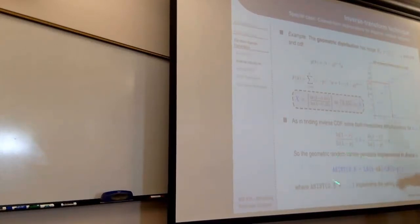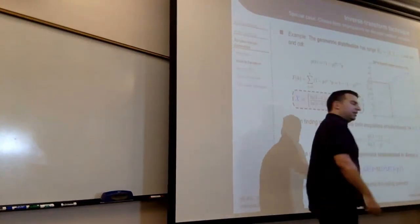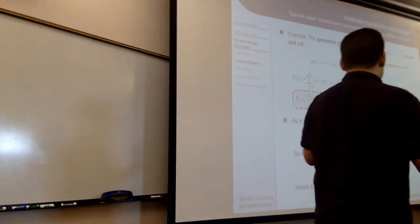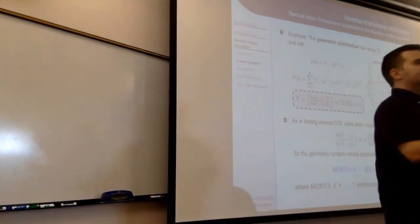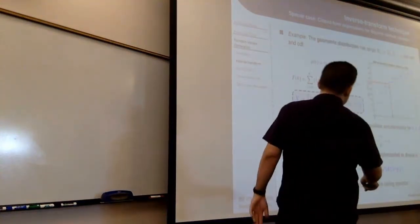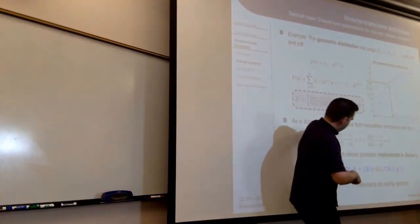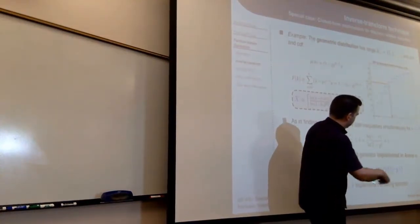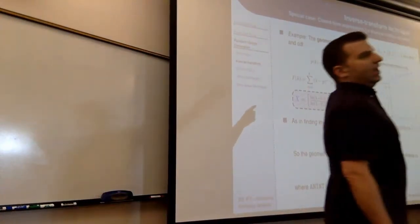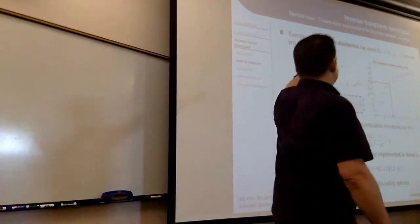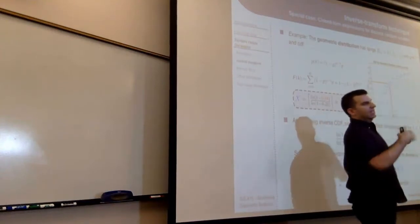If you wanted to implement the geometric in Arena: Arena doesn't have a ceiling function, but it has the ANINT function, which finds the nearest integer. To implement ceiling, add 0.5 to the argument before applying ANINT. So ANINT(0.5 + x) gives the ceiling of x. That is how we can generate geometric random variables inside Arena without manually entering every probability into the DISC function.